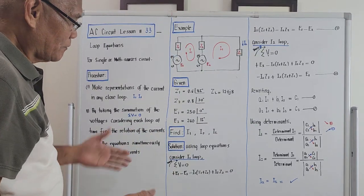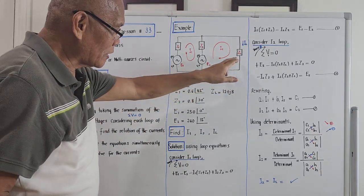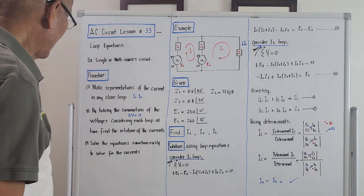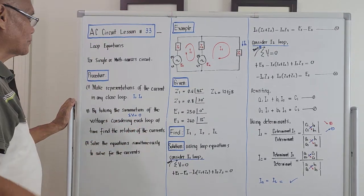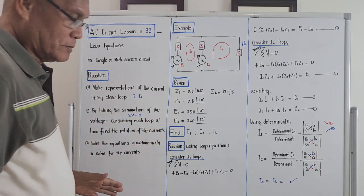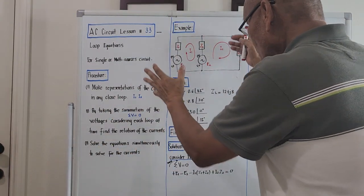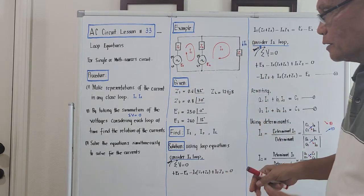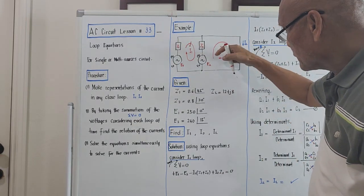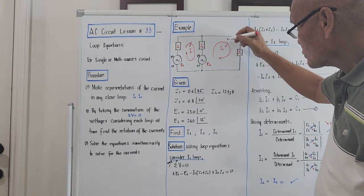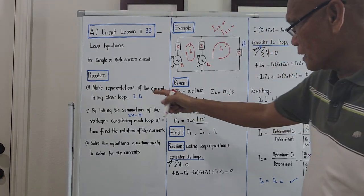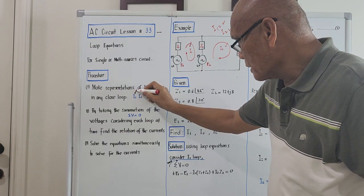Let's bring out the procedure. To compute for the current passing through a circuit component like CL, we use loop equations. Procedure number one: make representation of the currents in any closed loop. If we are given a circuit, the current circulating in the first loop is I1, and the current circulating in the second loop is I2.